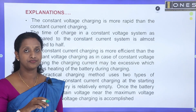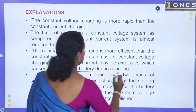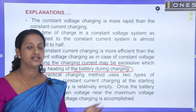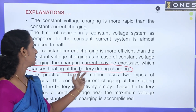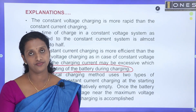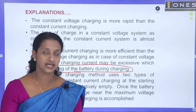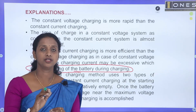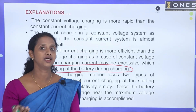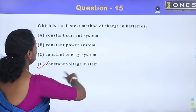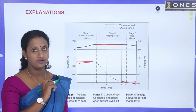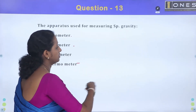Constant voltage charging is the fastest method of charging. Starting with constant current mode charge — that is efficient charging. As peak voltage is reached, it switches to constant voltage charging. Most rapid charging is constant voltage charging, and it is the most efficient.